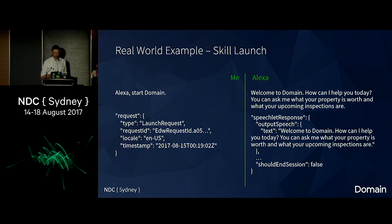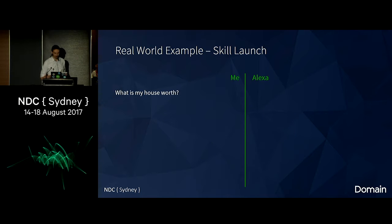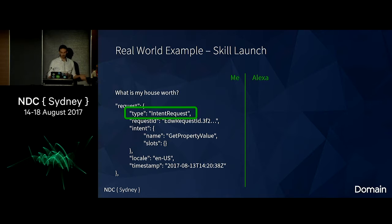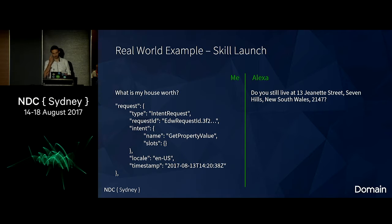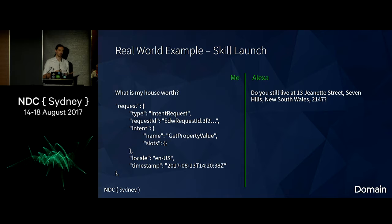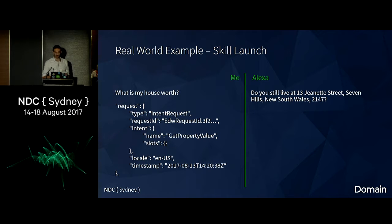It's just going to go with the same flow again — I can just say 'hey, what is my house worth?' and it maps to the same things as before. 'Do you still live at 13 Jeanette Street, Seven Hills, New South Wales, 2147?' This is very important: input by voice is difficult, so as much as possible, try to remember things about your users to make it a lot easier for them the next time around.